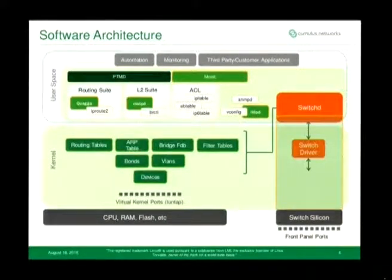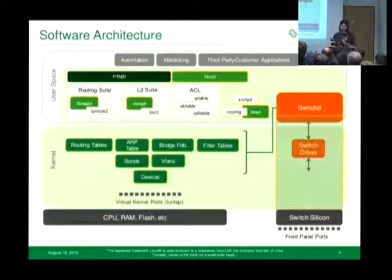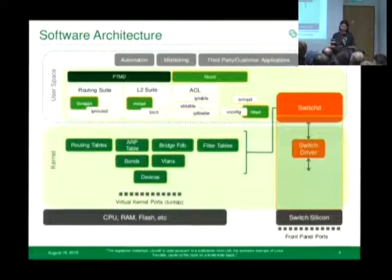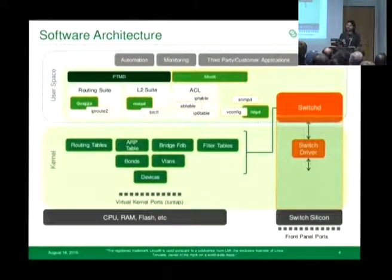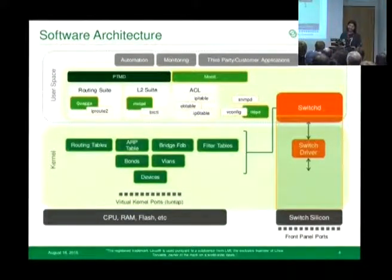Instead of using proprietary data structures in a big blob of proprietary software like most network operating systems, we just use the kernel's data structures. For example, the routing table is just the kernel routing table. Bridge configuration is just whatever you set up with BRCTL. And similarly, the ACL table is just iptables and ebtables. It's all stuff probably everyone in this room knows how to configure.